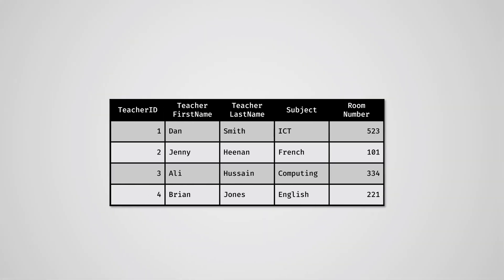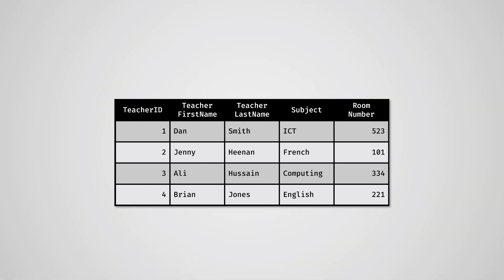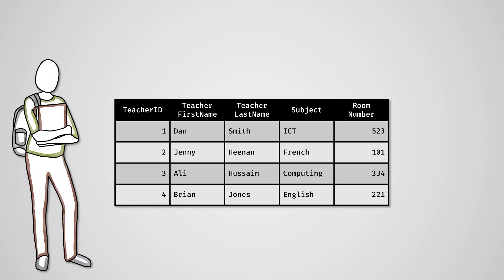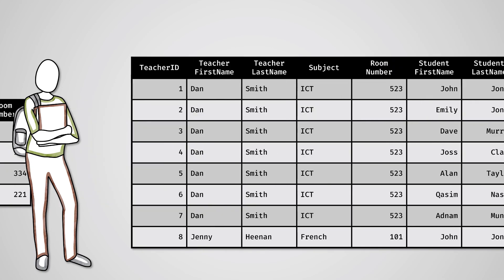For example, look at the teachers table from earlier. Say we wanted to store the students that each teacher teaches. There are two ways we could do this. We could simply add two extra columns, student first name and student last name.